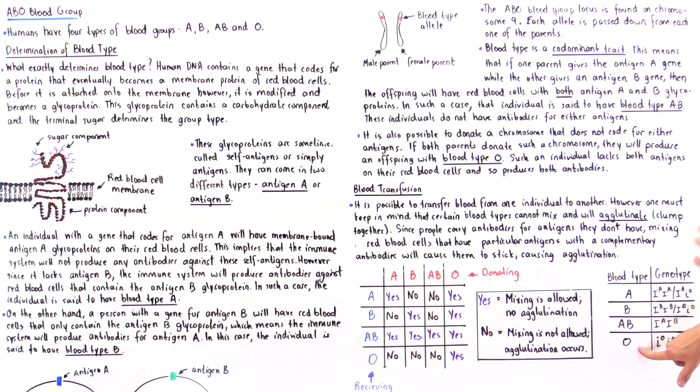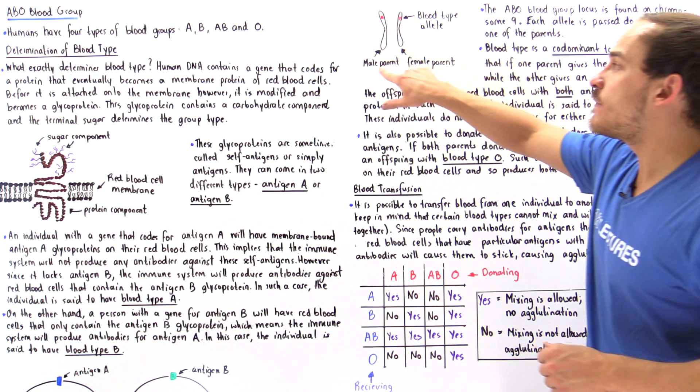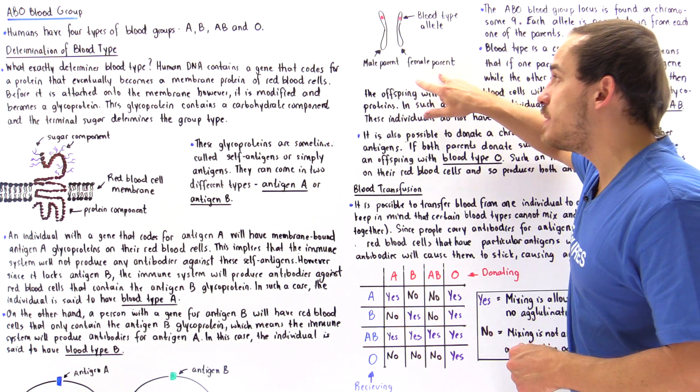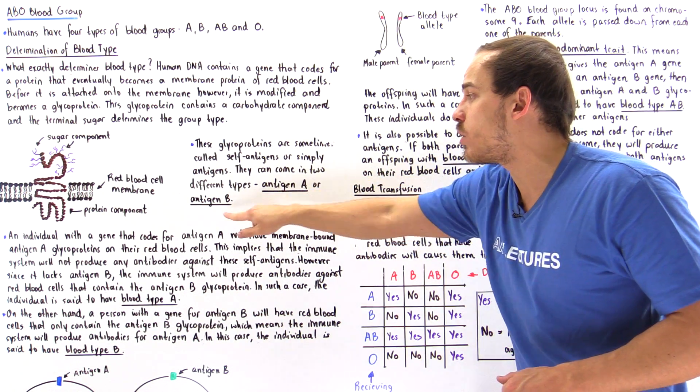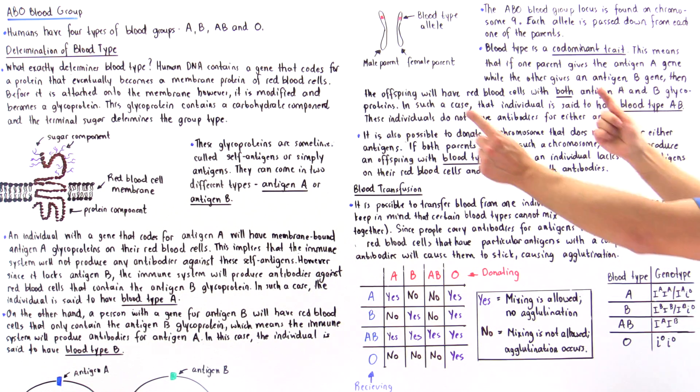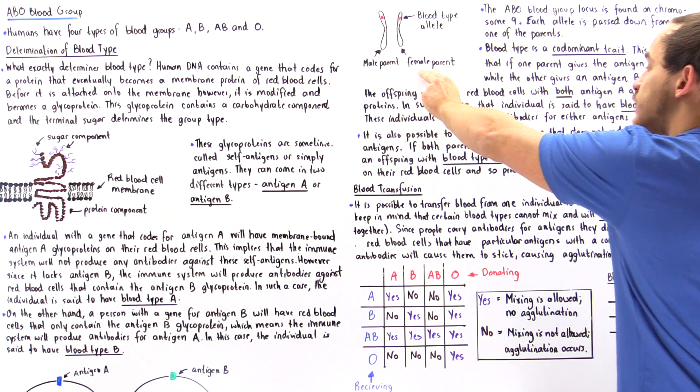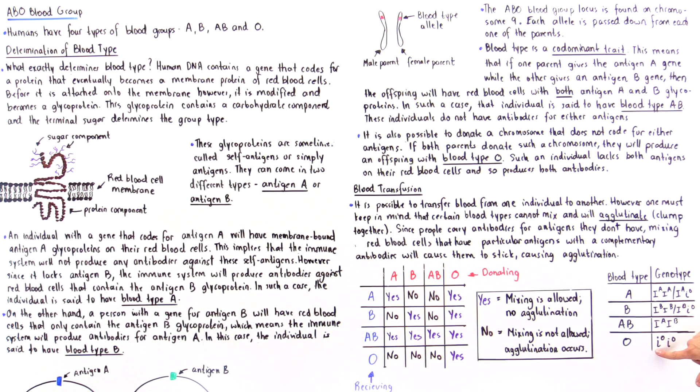And finally, to form blood type O, both of these have to be recessive, meaning they both have to lack these genes that code for either one of these antigens. And so in that case, if we have recessive and recessive, we form lowercase io lowercase io, and that gives us blood type O.